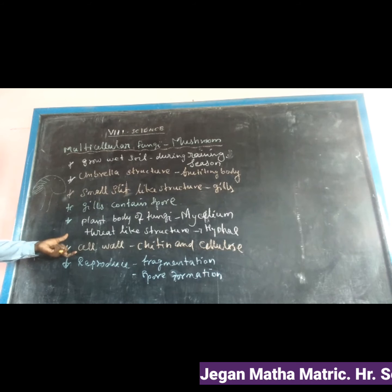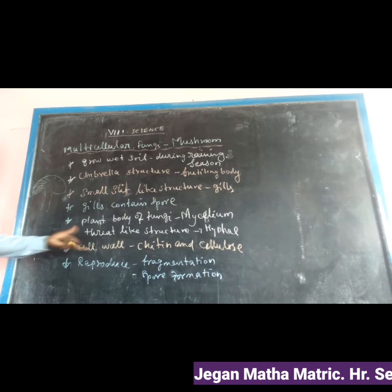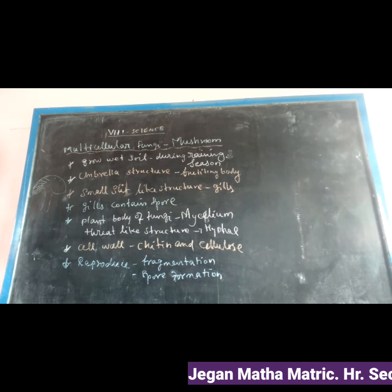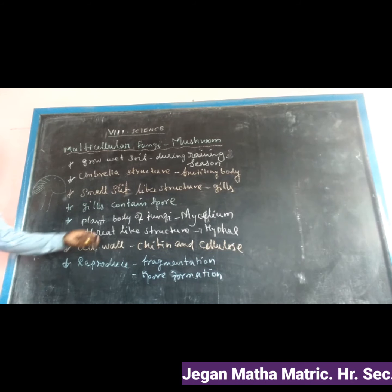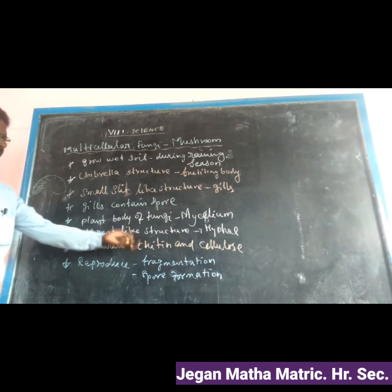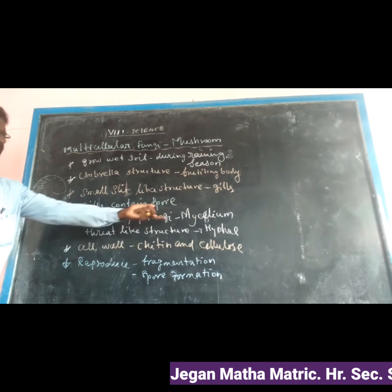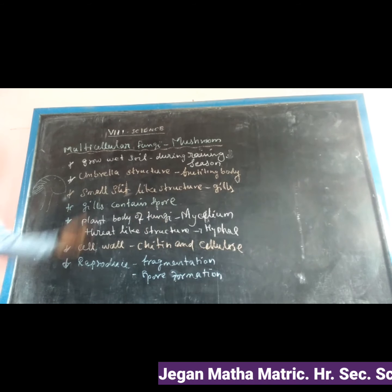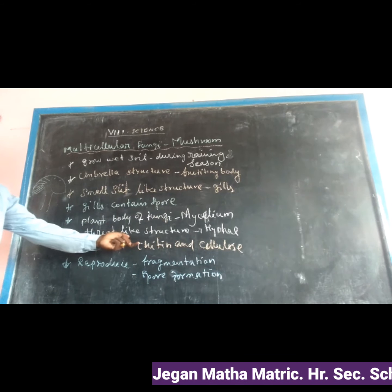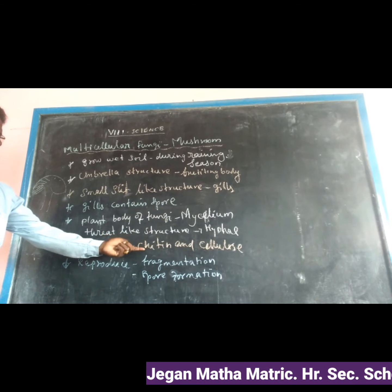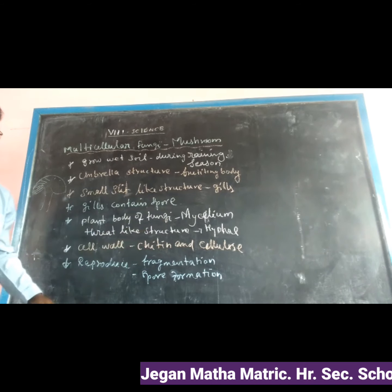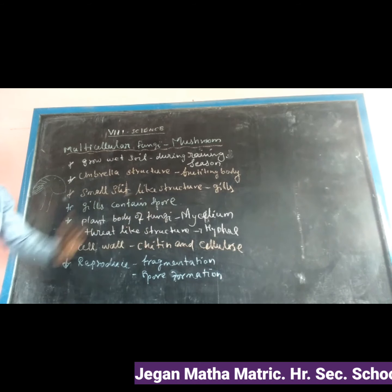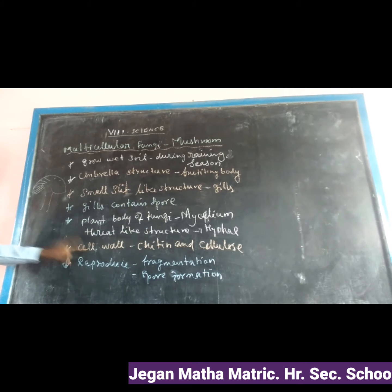The plant body of fungi has a cell wall. The cell walls are made up of chitin and cellulose — these special structural materials are present in the cell wall of fungi.